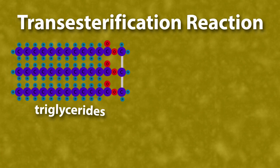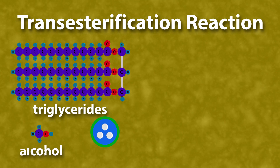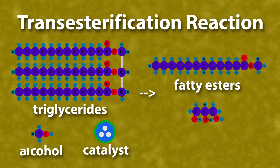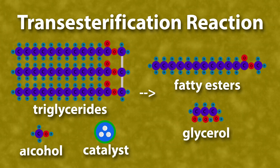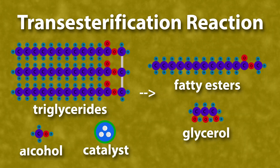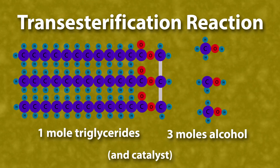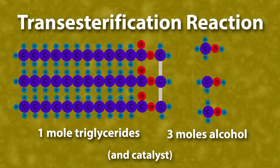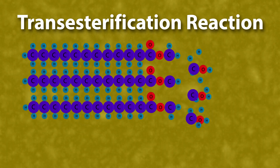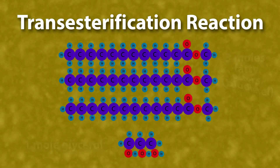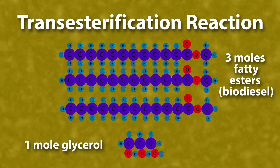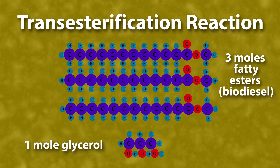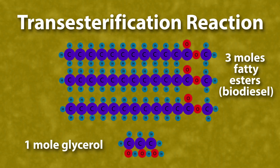In the transesterification reaction, triglycerides, alcohol, and a catalyst form glycerol and esters. You start with one mole of triglycerides, three moles of alcohol, and a catalyst. The result is one mole of glycerol and three moles of biodiesel.